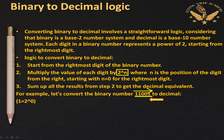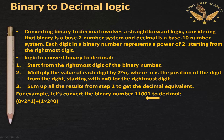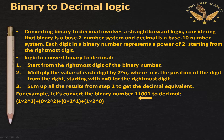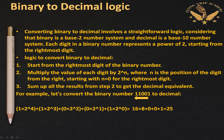Sum all the results to get the decimal equivalent. For 11001: 1 × 2^0 = 1; 0 × 2^1 = 0; 0 × 2^2 = 0; 1 × 2^3 = 8; 1 × 2^4 = 16. Summing: 16 + 8 + 0 + 0 + 1 = 25. So binary 11001 converts to decimal 25.